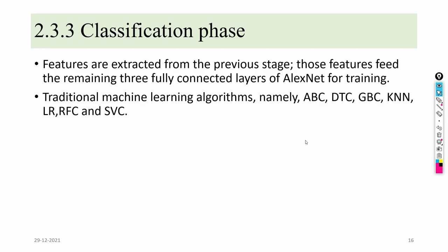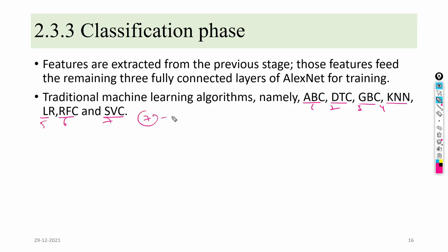After features are extracted by the convolutional layers, they are fed to the remaining fully connected layers and traditional machine learning algorithms. The traditional machine learning algorithms applied in this article are: AdaBoost classifier, Decision Tree classifier, Gradient Boosting classifier, K-Nearest Neighbor, Logistic Regression, Random Forest classifier, and Support Vector classifier — seven algorithms in total. The three fully connected layers of AlexNet are also applied for the classification part.